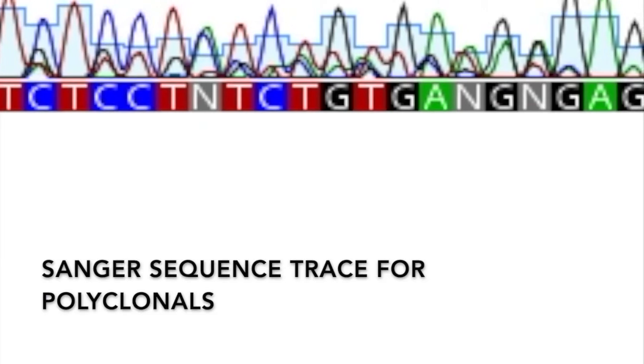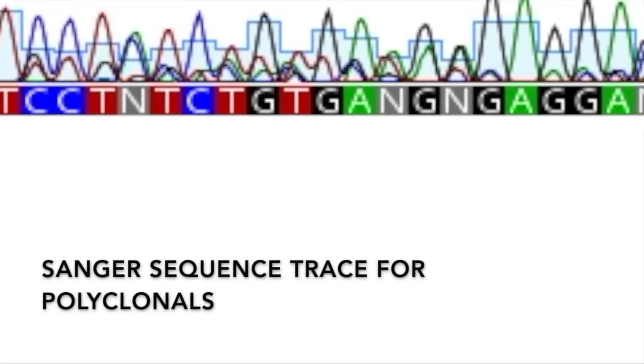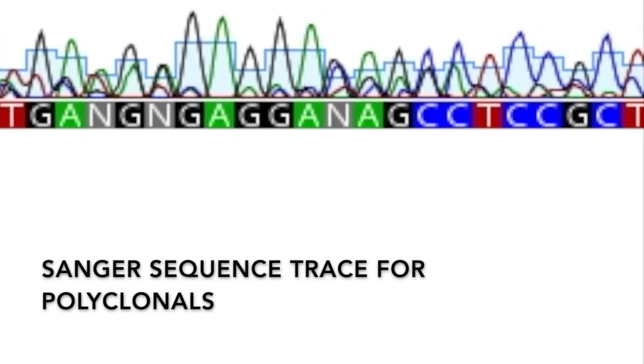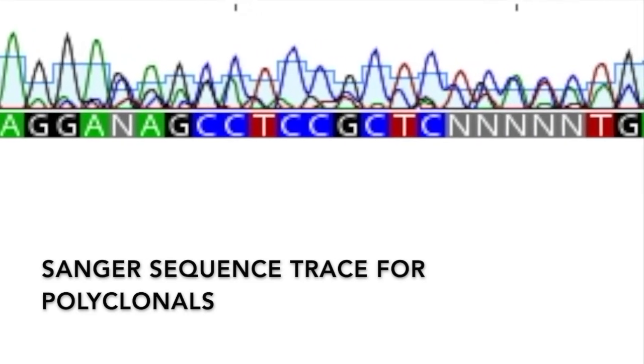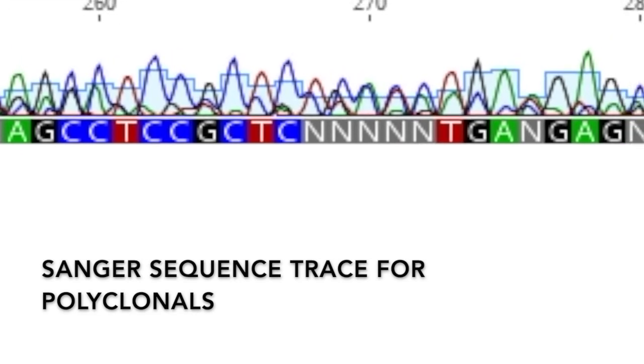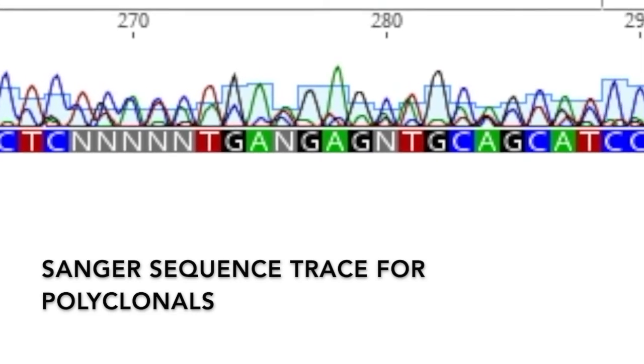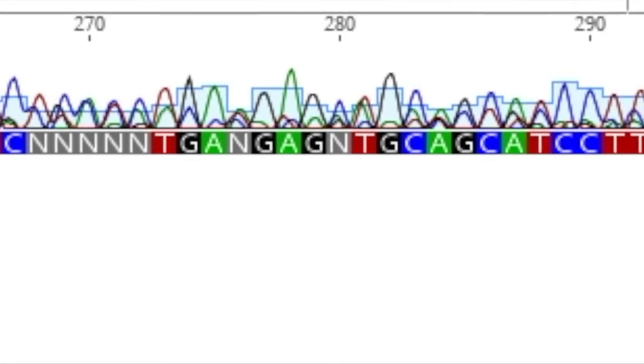Remember I said earlier that with the Sanger sequencing, you really don't get information where it's a polyclonal population because some will be wild-type sequences, some will be heterozygous, so only one allele got edited, and the others will have the homozygous allele. Well, when you come to this point where it's a monoclonal population, for your monoclonal screening...